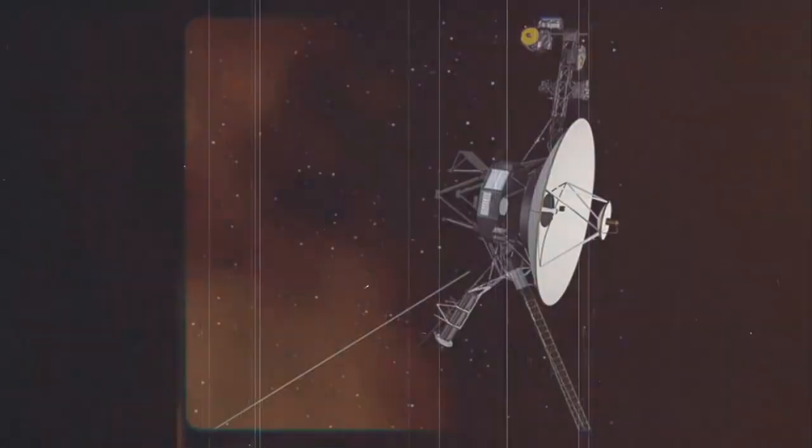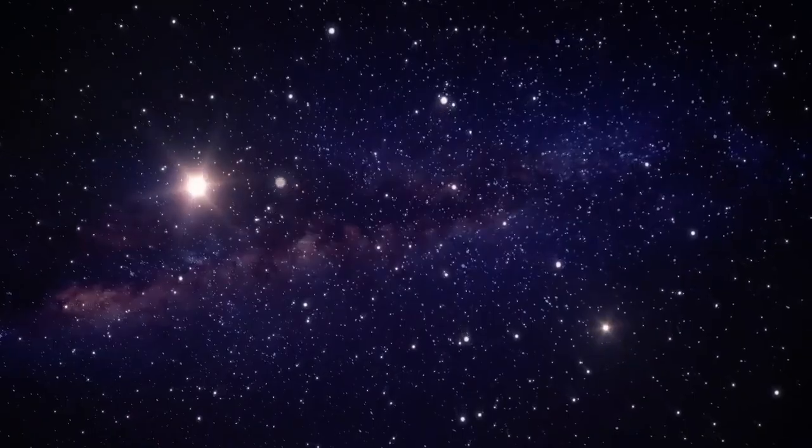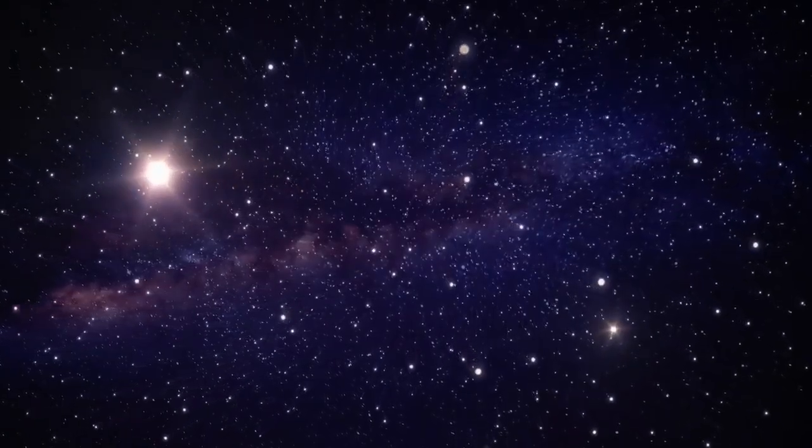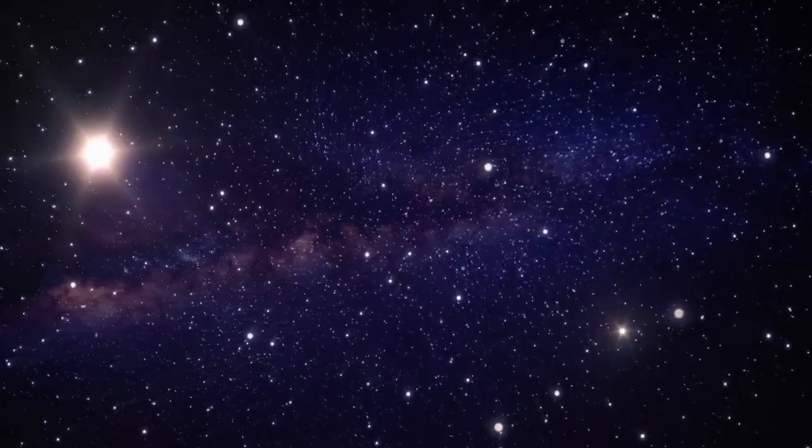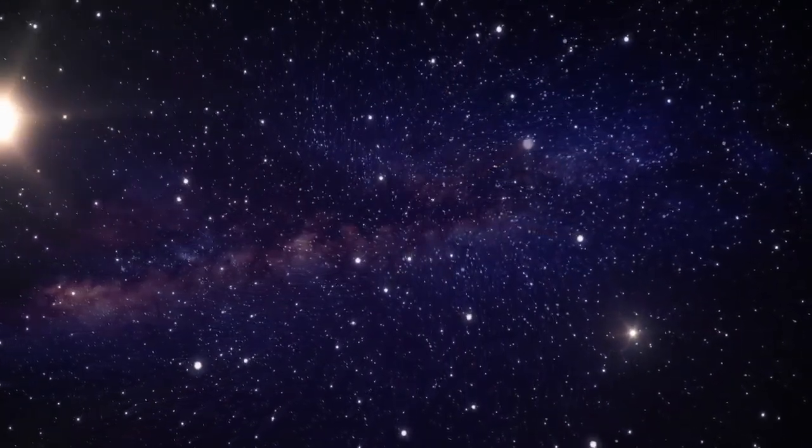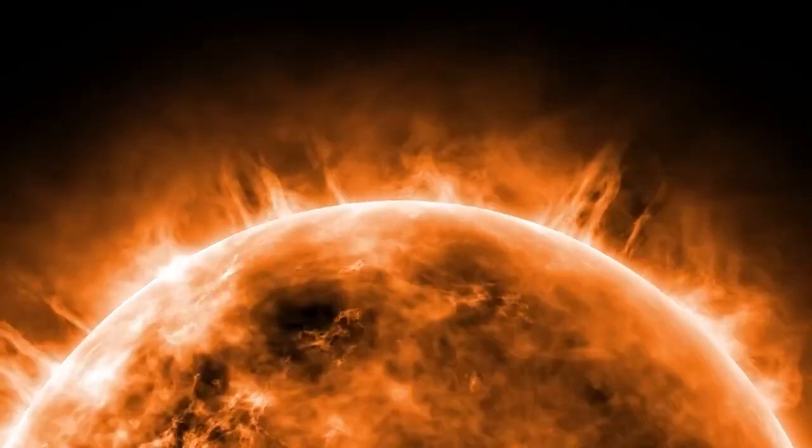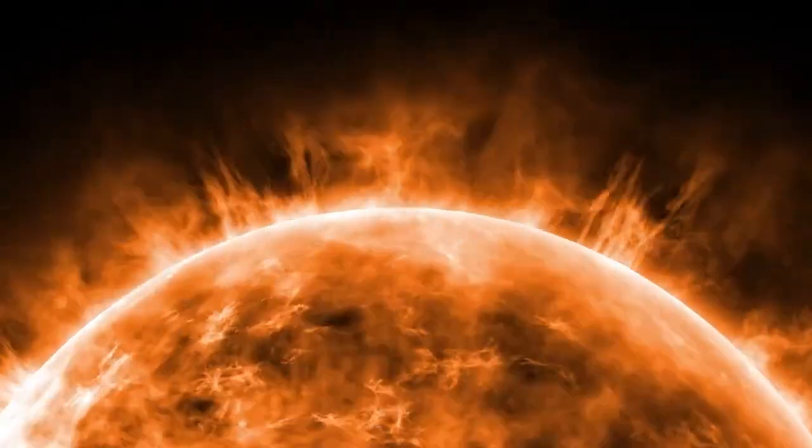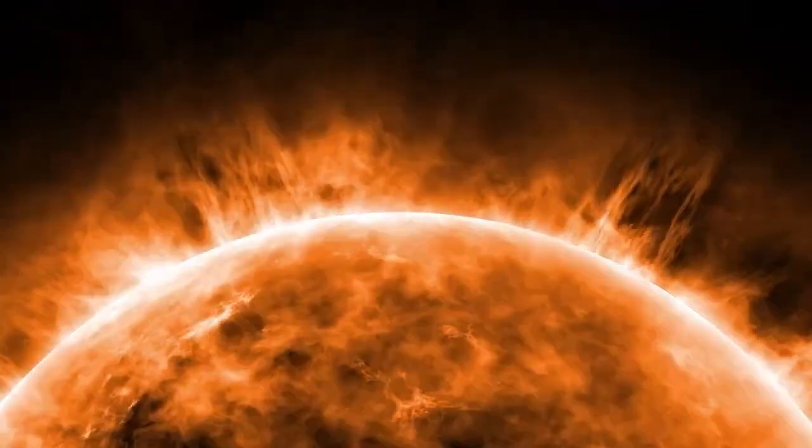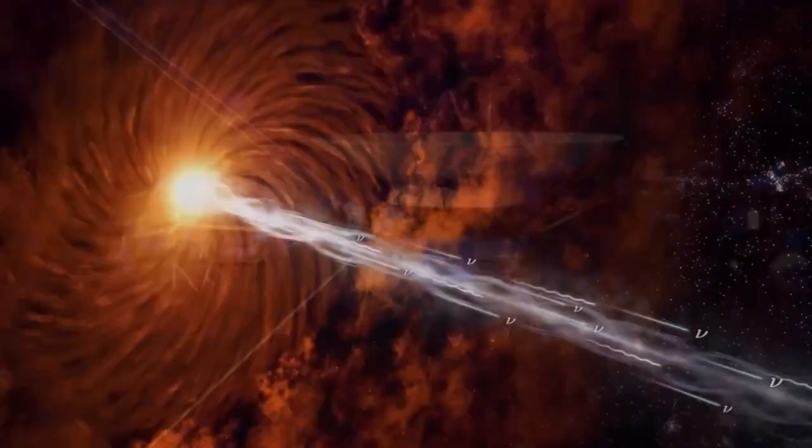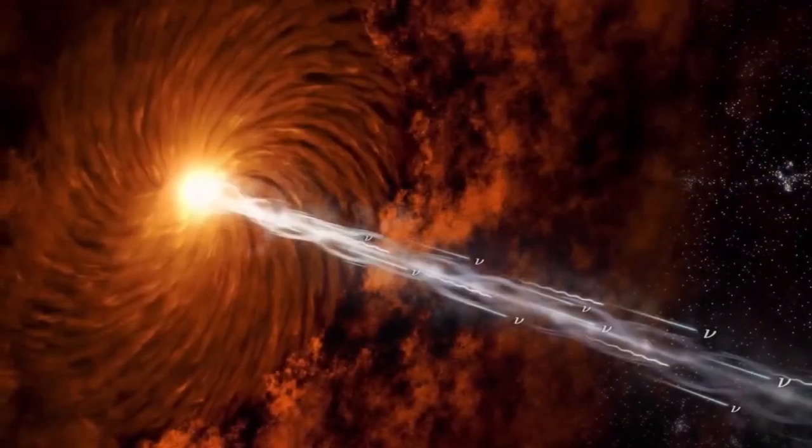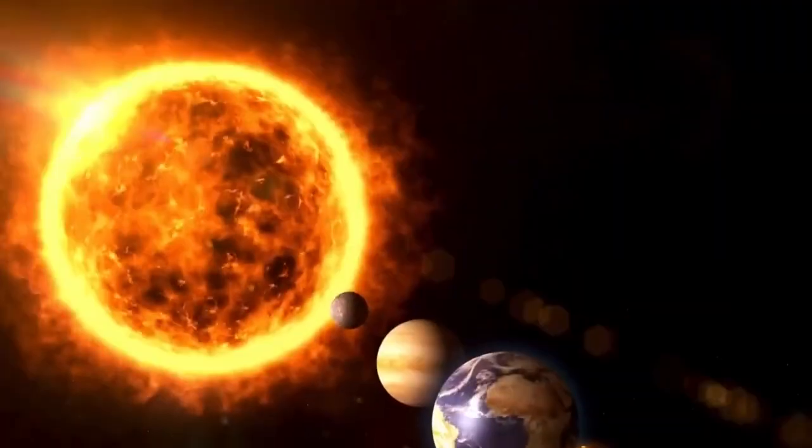The outer edge of the heliosphere, called the heliopause, marks the beginning of interstellar space. Understanding this boundary has profound implications for comprehending the Sun's movement through the galaxy, as well as the conditions around other stars scattered across the cosmos. Scientists are especially intrigued by the interactions at this threshold: how the solar wind and the interstellar medium mix, the extent of material exchange across the boundary, and the dynamics of this cosmic collision.